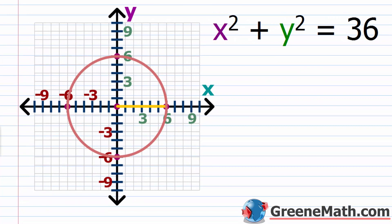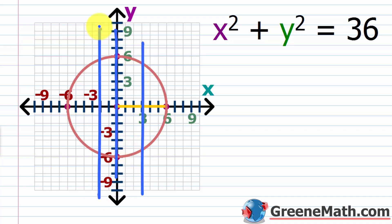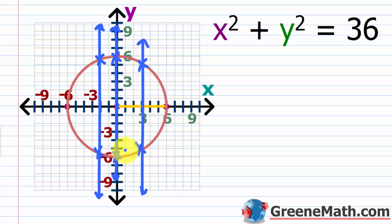Now let's look at one that's not a function: x squared plus y squared equals 36. We've talked about circles — we know this is the graph of a circle with center (0, 0) and radius 6. Visually, we can determine this is not a function. If we draw vertical lines, we can see they hit the circle in more than one location. For example, an x value of 0 corresponds to y values of both 6 and negative 6.